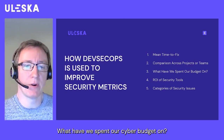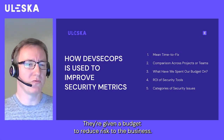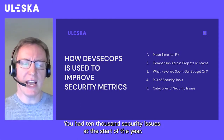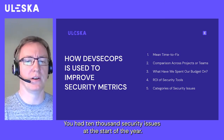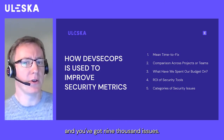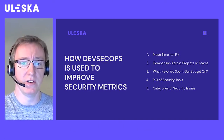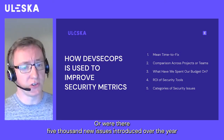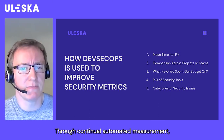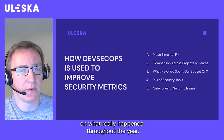What have we spent our cyber budget on? Cyber teams are given a budget to reduce risk to the business, but it can be hard to quantify that at the end of the year. You know you had 10,000 security issues at the start of the year, spent $10 million in security budget, and now you've got 9,000 issues — but what does that tell you? Did you simply fix 1,000 issues, or were there 5,000 new issues introduced and you ended up fixing 6,000 of them? Through continual automated measurement, those daily changes can present much better data on what really happened throughout the year.